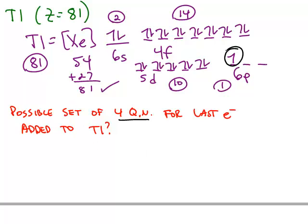So this is the last electron. If you look at the orbital it's in, it's found in a 6p orbital, one of the three 6p orbitals.